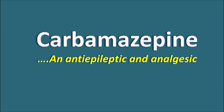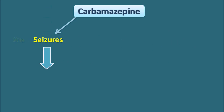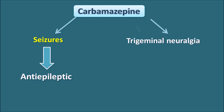Carbamazepine is an anti-epileptic and analgesic drug. It is used to treat seizures, which is why it is called an anti-epileptic drug. Carbamazepine can also be used in situations like trigeminal neuralgia, where there is pain within the neuron, which is why it can also be called an analgesic.